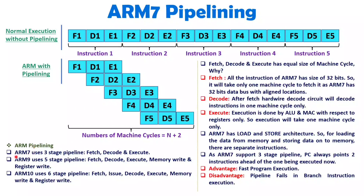ARM7 has a three-stage pipeline. But when it comes to the pipeline of ARM9, that is of five stages, and it is also having single machine cycle only. But along with fetch, decode, execute, you will be performing two more stages. Those are: memory write and register write. In memory write, you will be writing data of a register onto memory. And in register write, you will be writing data of memory inside a register. So that is how two more stages are added in ARM9.